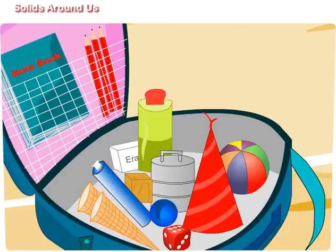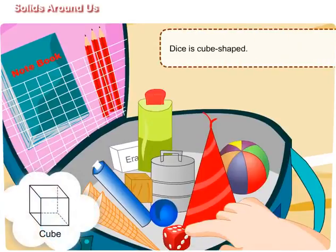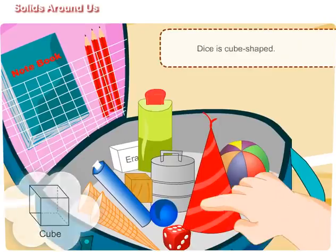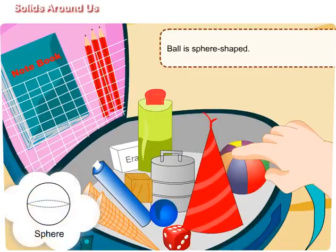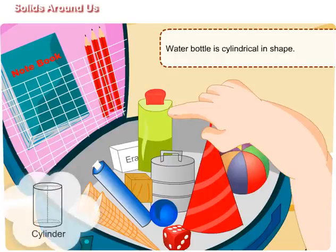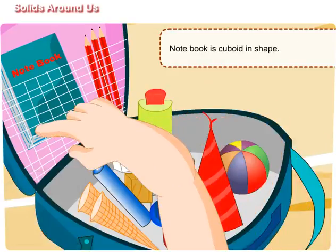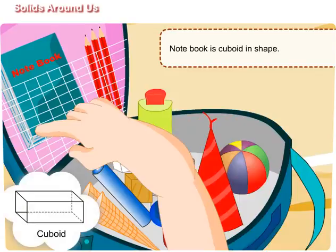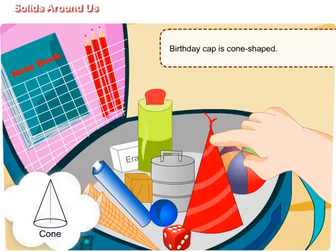Maggie, look — this dice is cube-shaped. Your ball is sphere-shaped. Your water bottle is cylindrical in shape. Your notebook is cuboid in shape. Your birthday cap is cone-shaped.